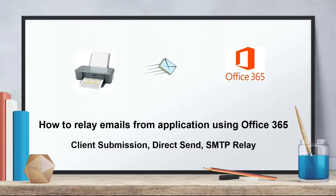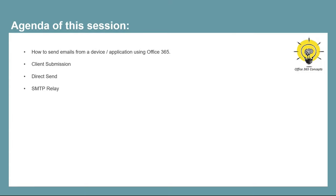Hi guys, I hope you all are doing well and welcome to my channel. In this particular video, we will be discussing how to set up a device or an application to send emails using Office 365. We will talk about three types of email relay methods: SMTP Auth Client Submission, Direct Send, and SMTP Relay. We will discuss the differences between these three methods and configure them one by one to send emails from an application.